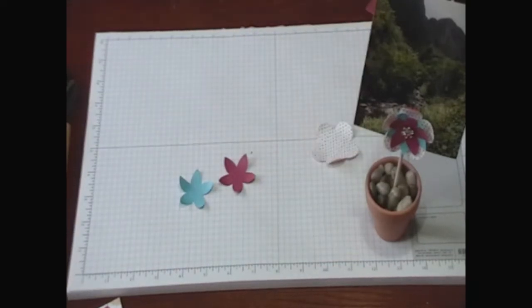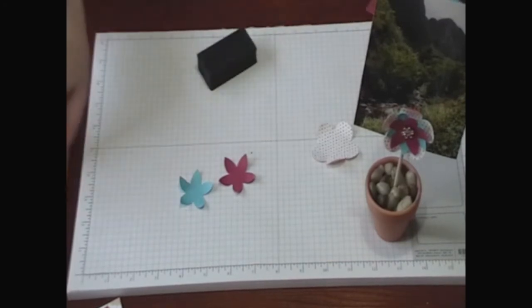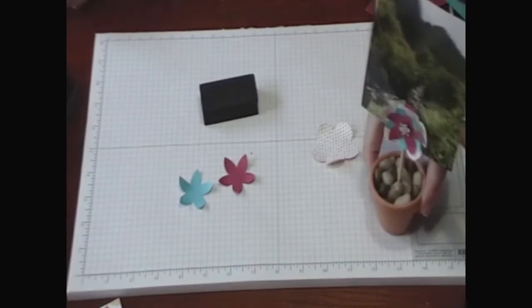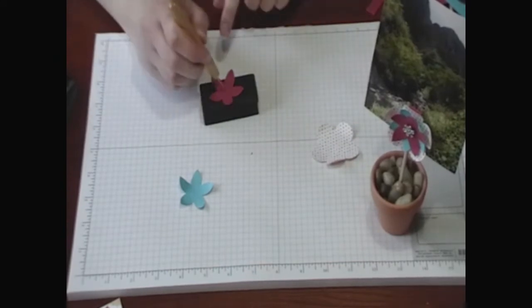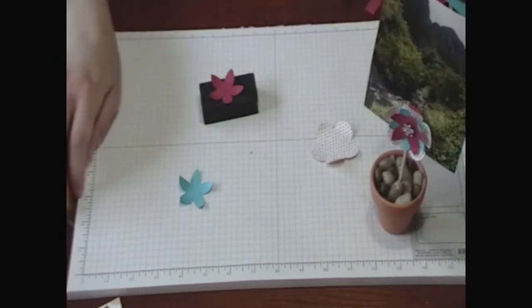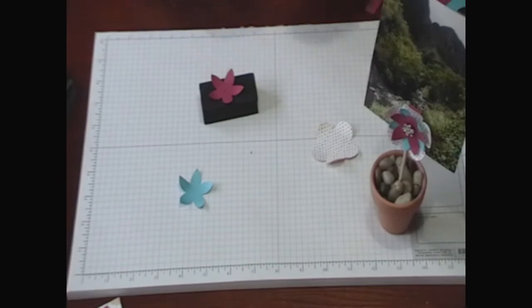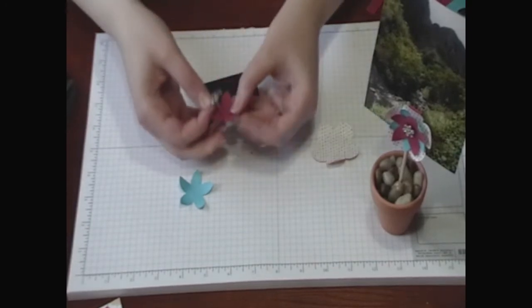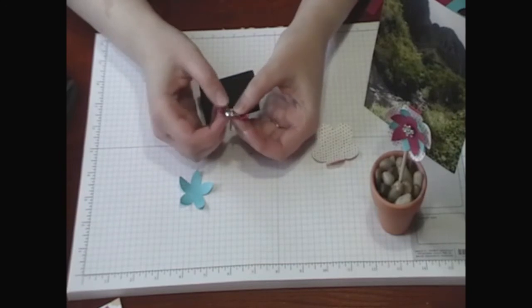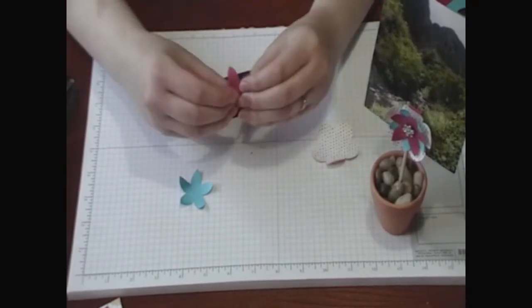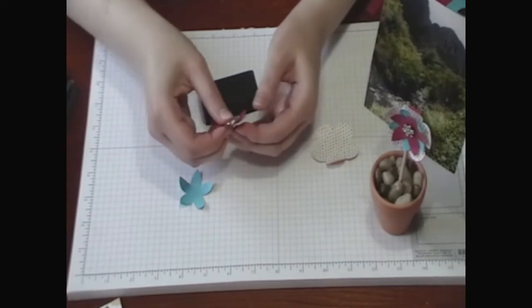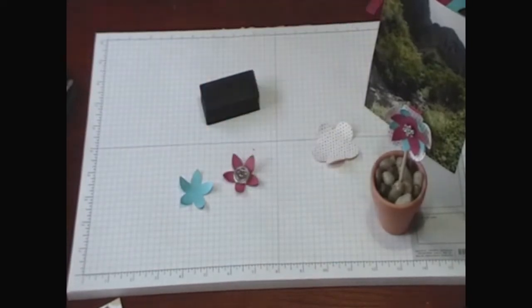Then I'm going to use my paper piercer and pierce a hole in the middle of the rose red flower. Then I'm going to put a designer brad. These are the flower designer brads. I'm going to put one of those right in the middle. My pink flower.